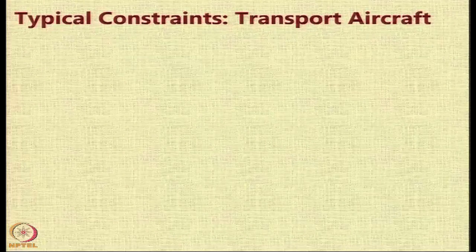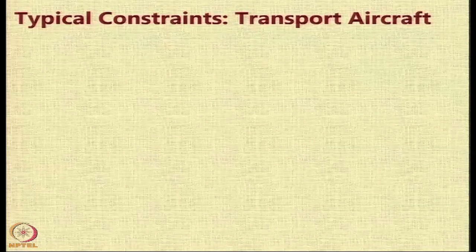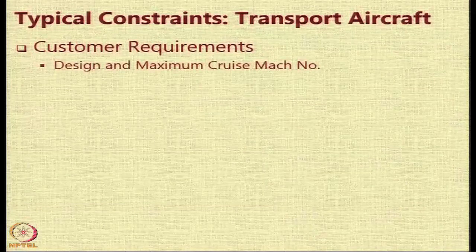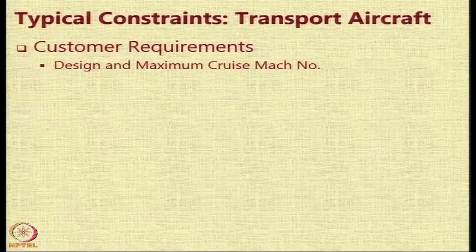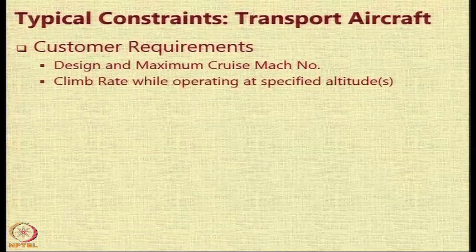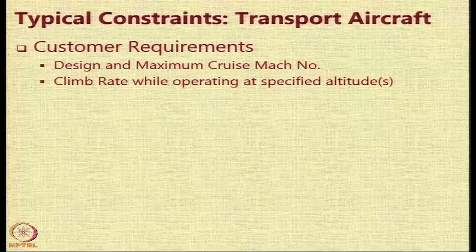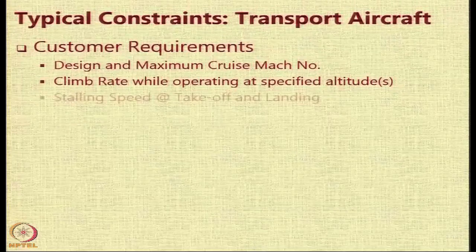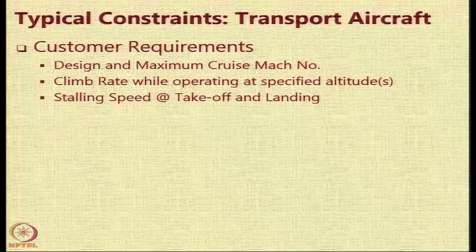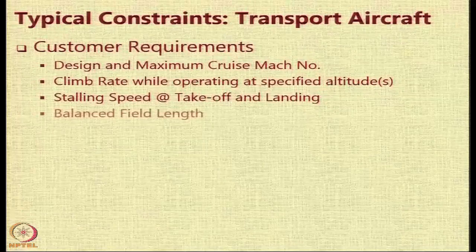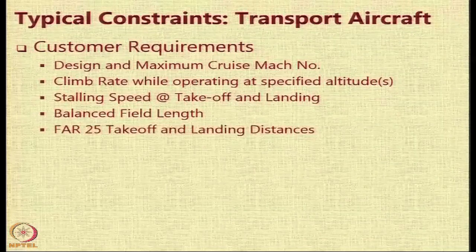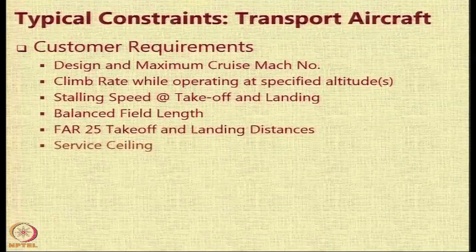Typically, the constraints imposed on a transport aircraft could be driven by customer requirements such as the design Mach number and the maximum cruise Mach number, the climb rate when operating at a specific altitude — say climb rate at sea level or climb rate at 1 kilometer altitude — the stalling speed permitted at takeoff and landing. For example, there could be a constraint on balanced field length, a constraint on FAR 25 takeoff and landing distances, and a constraint on ceiling.